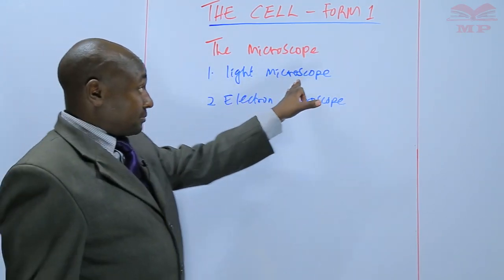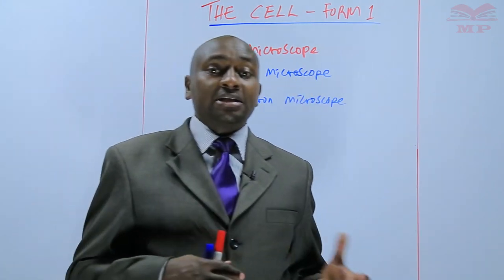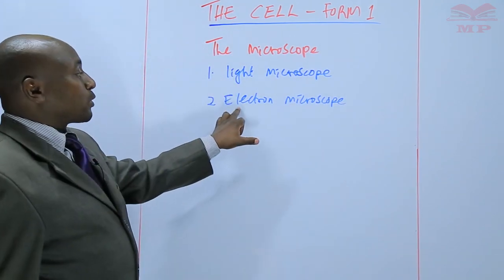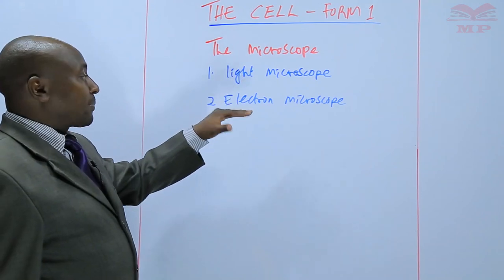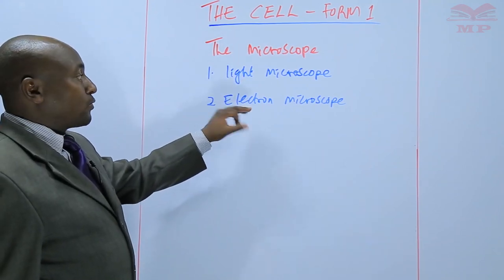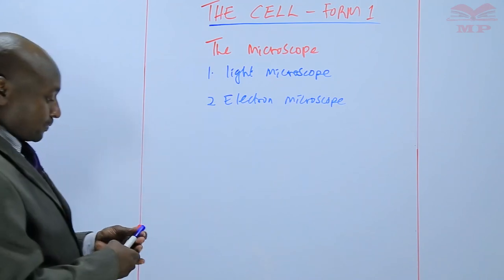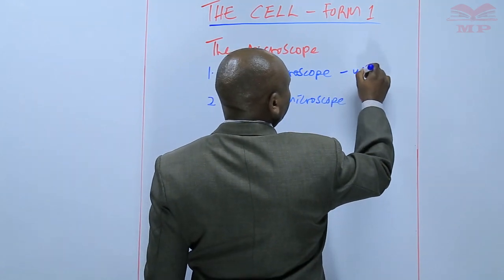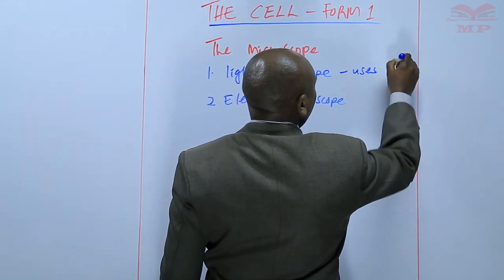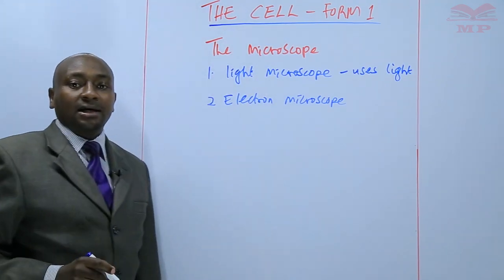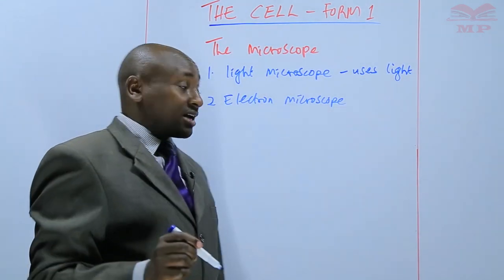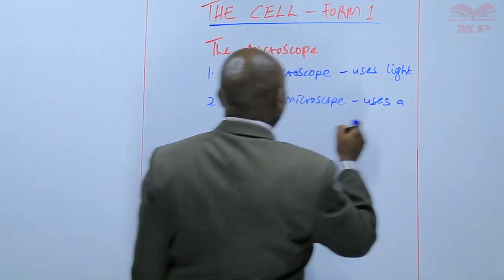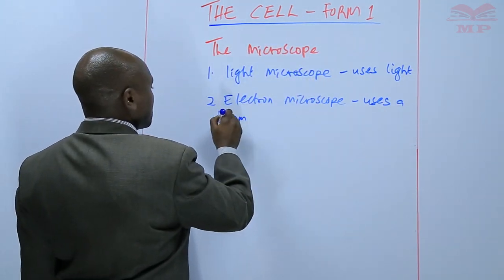The light microscope also has the ability to distinguish the internal parts, what we call resolution. The electron microscope plays a similar role, but it is more powerful than a light microscope. The light microscope uses light to illuminate specimens, while the electron microscope uses a beam of electrons.